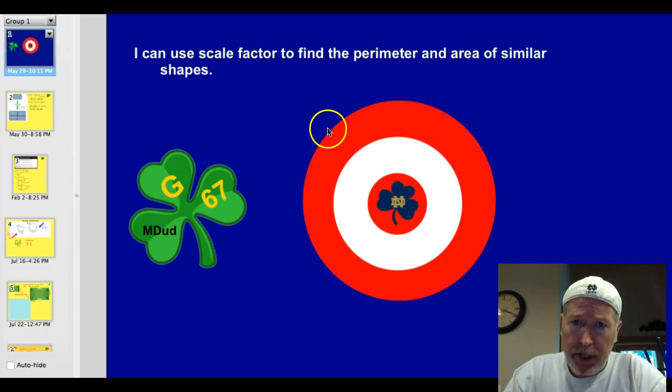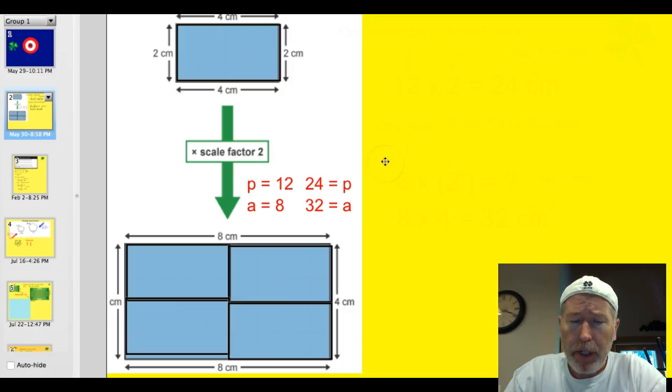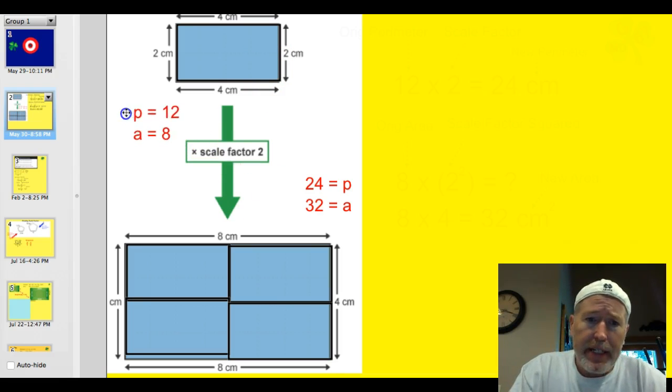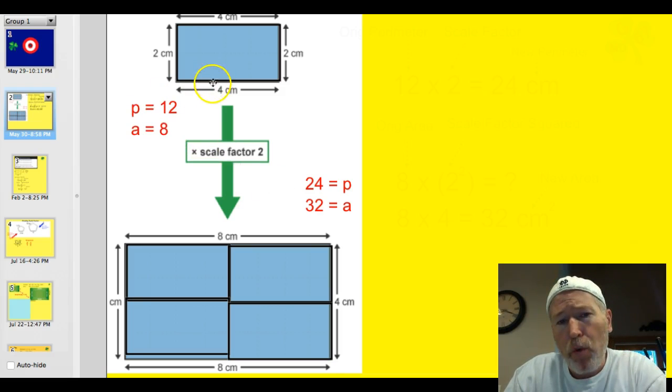Tonight, officially our target is I can use scale factor to find the perimeter and area of similar shapes. Let's do this thing. Let's study these two shapes here. We have these two rectangles, and they are similar. This original rectangle here has an area of 8 and a perimeter of 12. Now, this one here is twice as large.